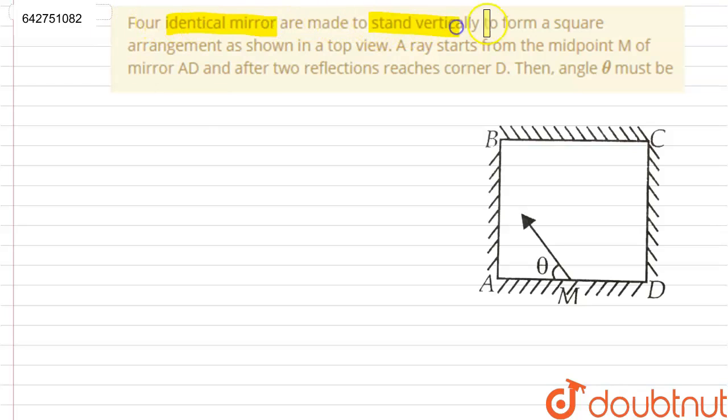made to stand vertically in a square arrangement as shown in a top view. A ray starts from the midpoint M of the mirror AD and after two reflections reaches the corner D. Then the angle theta must be